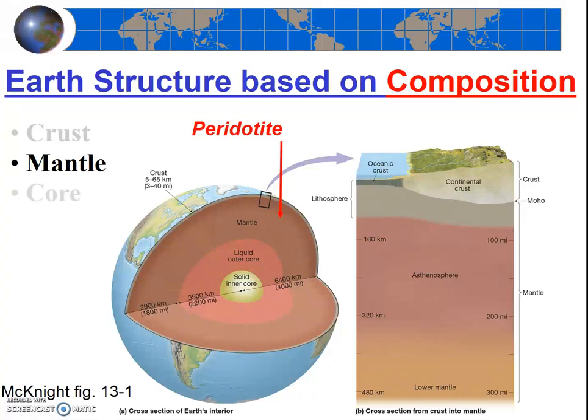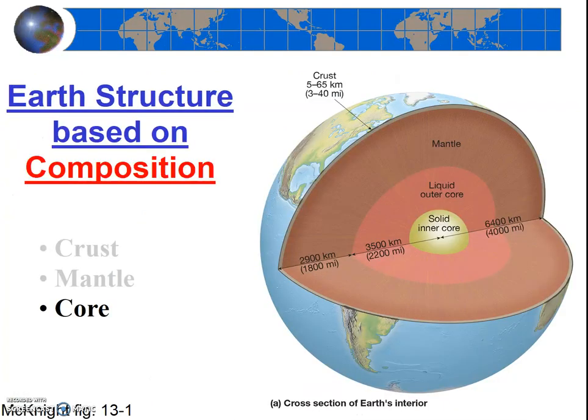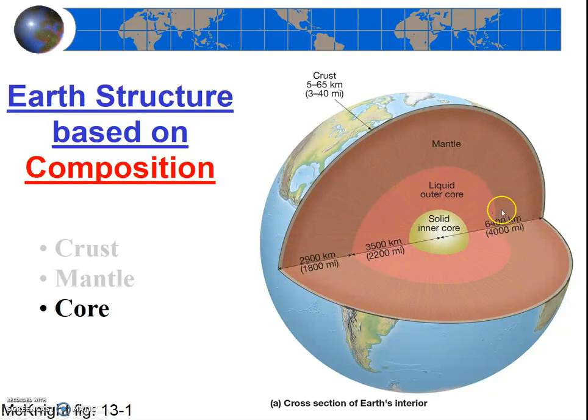Peridotite is also very iron rich, and the density of peridotite is actually greater than basalt—3.3 grams per centimeter cubed. Moving deeper in, we are now in the core. The core is the third and innermost of our three layers, at the center of the earth.